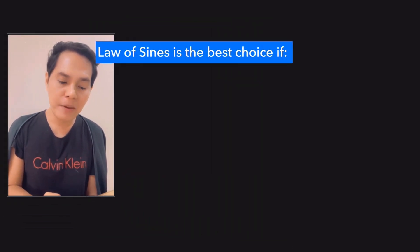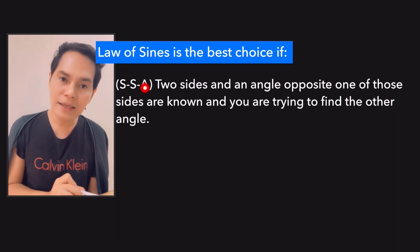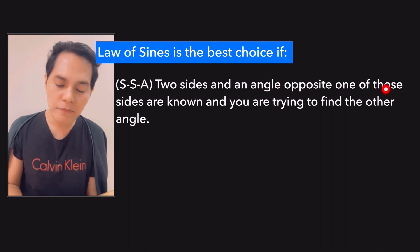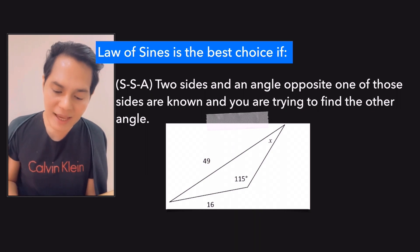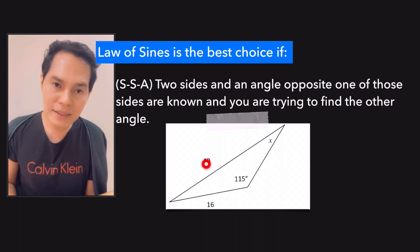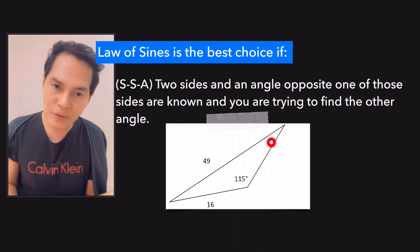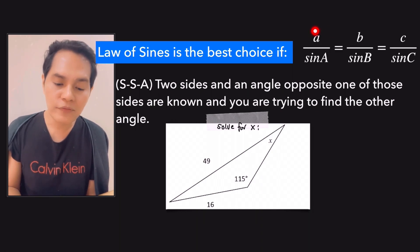Let's start with the law of sines first. Remember that the law of sines is the best choice for the SSA condition — side-side-angle — meaning two sides and an angle opposite one of those sides are known. Look at this illustration: you have the side-side-angle condition where the angle is opposite one of the sides, and you are trying to find the other angle x. To solve for x here, we make use of the law of sines.